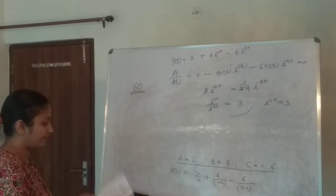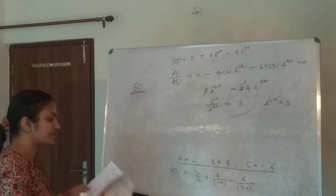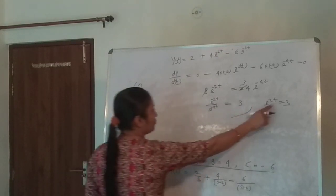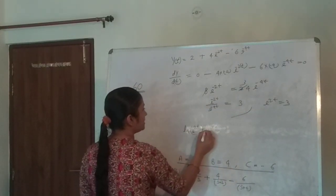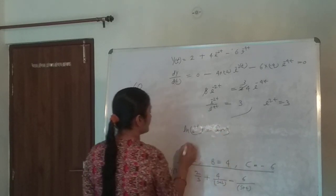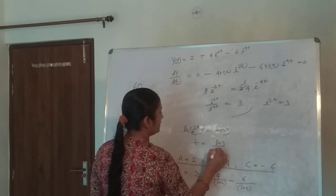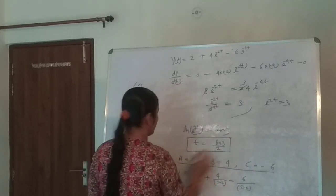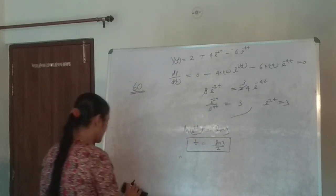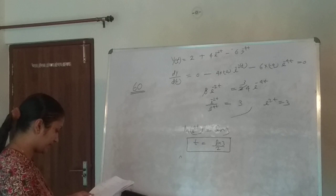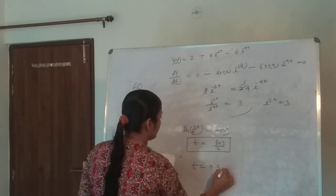The value of t is in minutes because they have said the value of tau is in minutes in that question, where the time constants are in minutes. So ln(e^(2t)) equals ln(3), that is nothing but t equals ln(3) divided by 2. Solve this, you will get t equals 0.549 minutes.